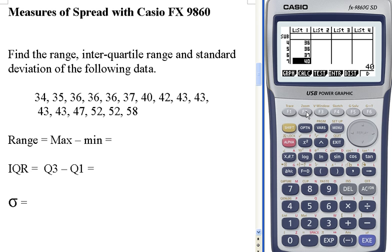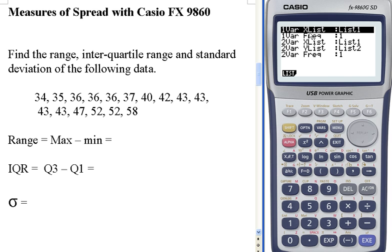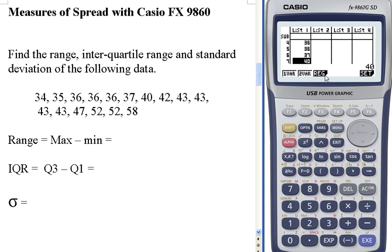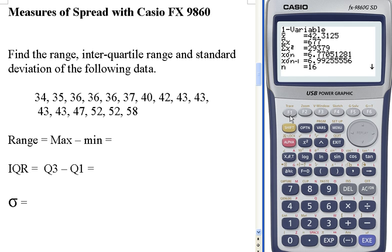Now we need to calculate these things. Just check it's set up right. Our data is in XList, List1, and the Frequency is 1. Good. Exit. Okay, that was set. Now we check our one variable statistics. There it is.